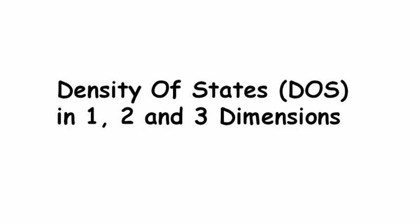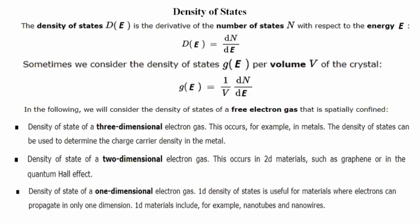In the third part we will discuss the density of states in one, two and three dimensional materials. The density of states g(E) is the derivative of the number of energy states N with respect to energy E — that means the number of energy states having the same energy level E. g(E) is equal to dN/dE, and the corresponding energy states with the same energy level are called degenerate states. Sometimes we consider the density of states g(E) per unit volume: g(E) = (1/V)(dN/dE).